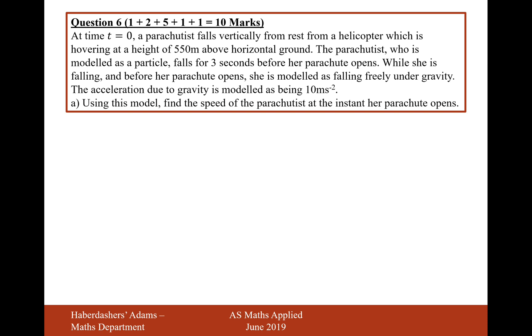At time t equals 0, a parachutist falls vertically from rest from a helicopter which is hovering at a height of 550 meters above horizontal ground. The parachutist, who is modeled as a particle, falls for 3 seconds before her parachute opens. While she is falling and before her parachute opens, she is modeled as falling freely under gravity. The acceleration due to gravity is modeled as being 10 meters per second squared.